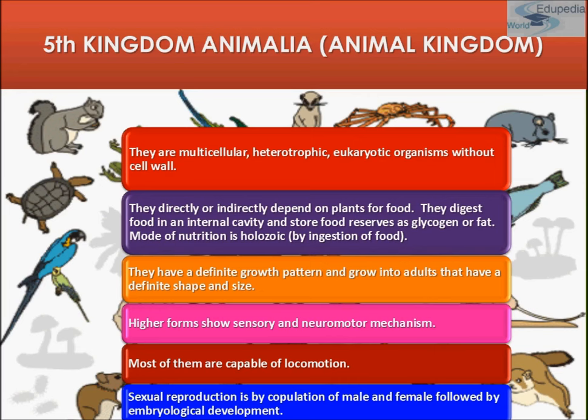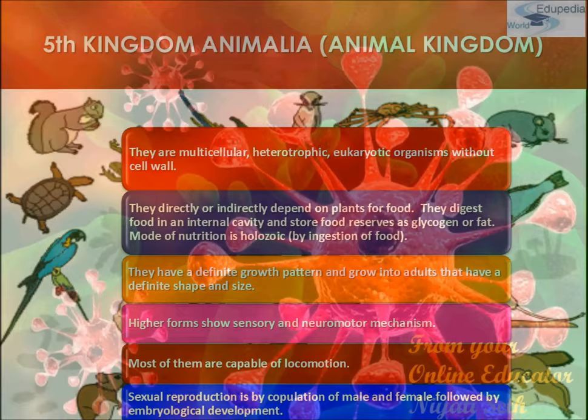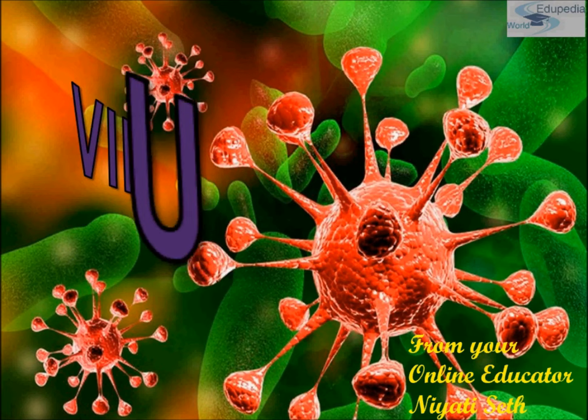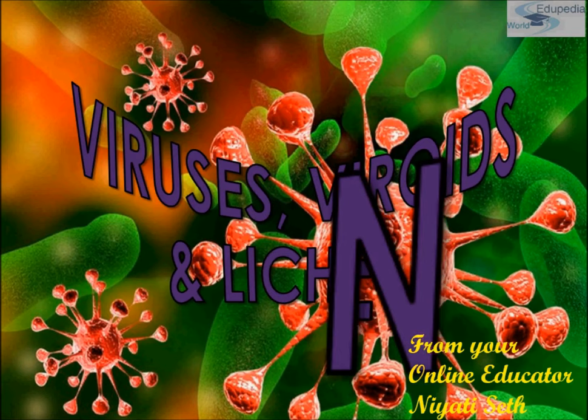Now let's study viruses, viroids, and lichens. In R.H. Whittaker's five kingdom classification, he did not include acellular organisms such as viruses, viroids, and lichens.